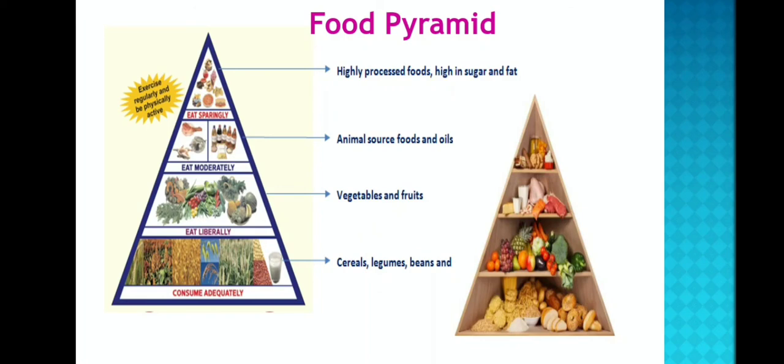Coming to the food pyramid: food groups are arranged in food pyramid shapes. In this food pyramid, cereals and pulses are placed at the base — these groups are eaten adequately. In the second layer, vegetables and fruits are eaten liberally. In the third layer, animal sources like meat, milk products and oils are eaten moderately. In the topmost layer, sugars, fats and highly processed foods are eaten sparingly.